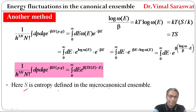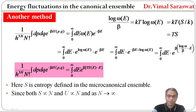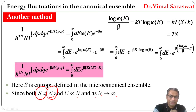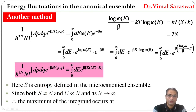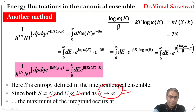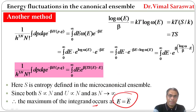Here S is the entropy defined in the micro-canonical ensemble. Since both S and U are directly proportional to N, as N tends to infinity, the maximum of the integrand occurs at E equal to E-bar. So at E equal to E-bar, the integrand value is maximum.